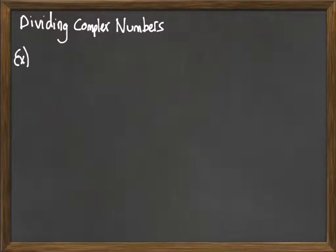So we begin with this example: 2 minus 7i over 8. So here we're dividing by a real number. Because we're just dividing by a single number, we can distribute that single number through into each numerator.